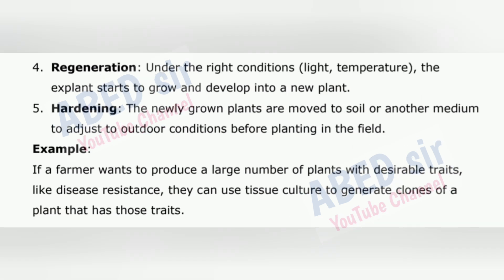4. Regeneration – under the right conditions of light and temperature, the explant starts to grow and develop into a new plant. 5. Hardening – the newly grown plants are moved to soil or another medium to adjust to outdoor conditions before planting in the field. For example, if a farmer wants to produce a large number of plants with desirable traits, like disease resistance, they can use tissue culture to generate clones of a plant that has those traits.